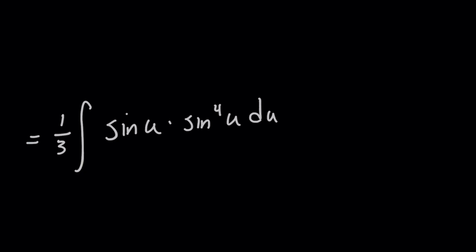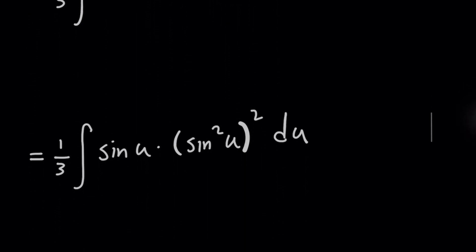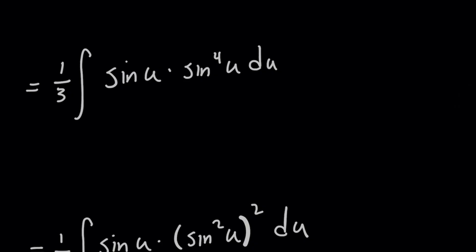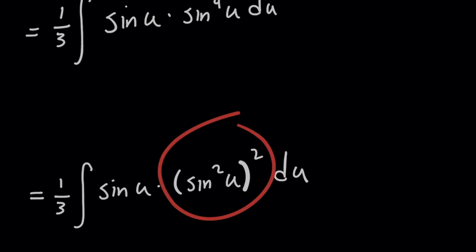And remember from your trigonometric identities, that sine squared of x plus cosine squared of x equals one. So what's really convenient here is that because sine to the fourth of u is a power of sine, that is a perfect square. If we write sine to the fourth of u as sine squared of u all squared, this inner part now can be replaced with that trigonometric identity.